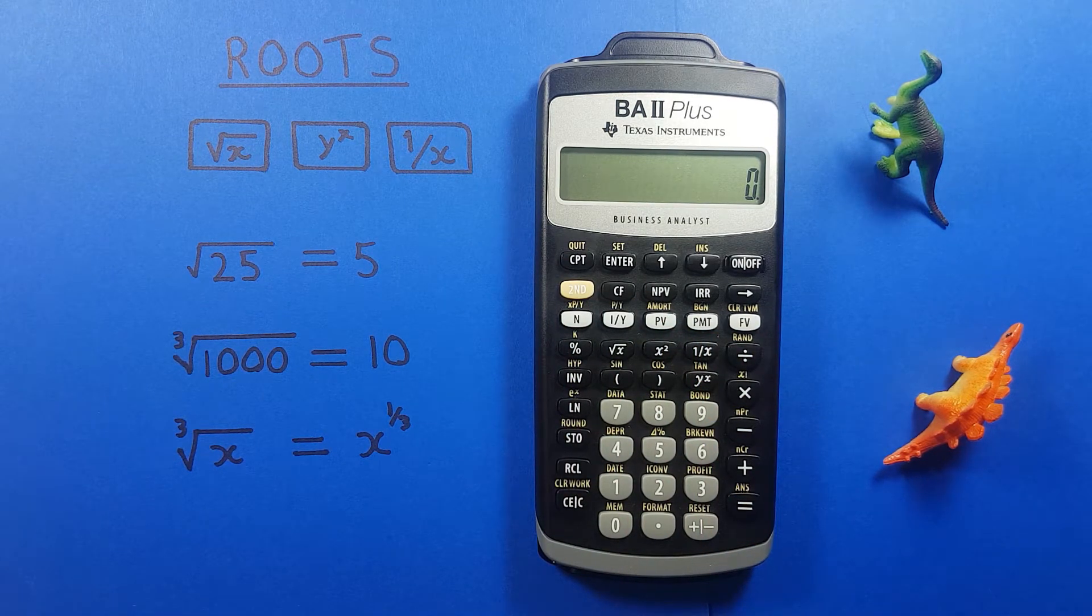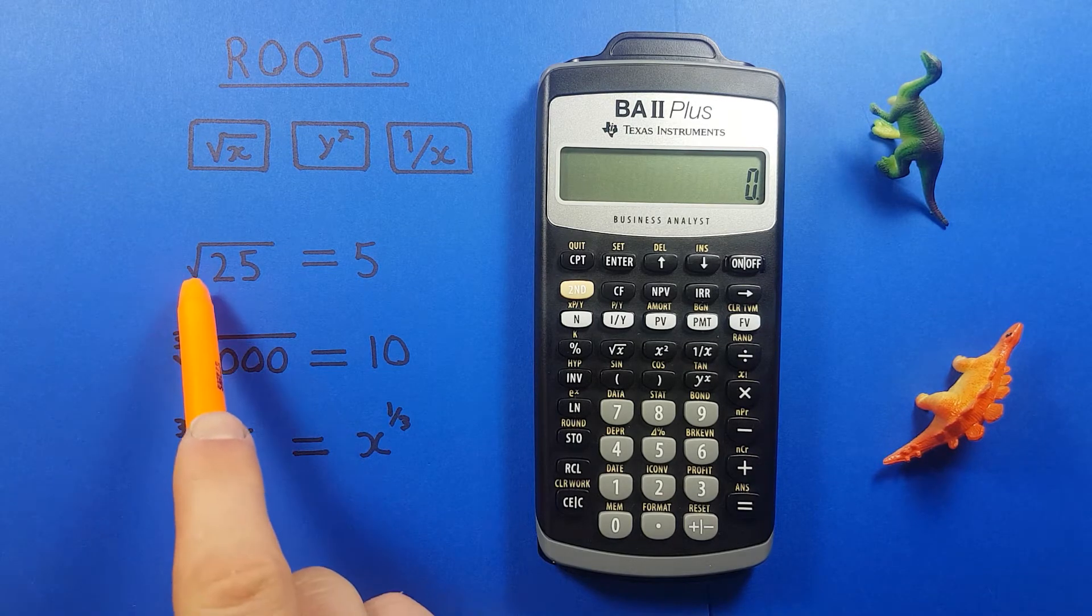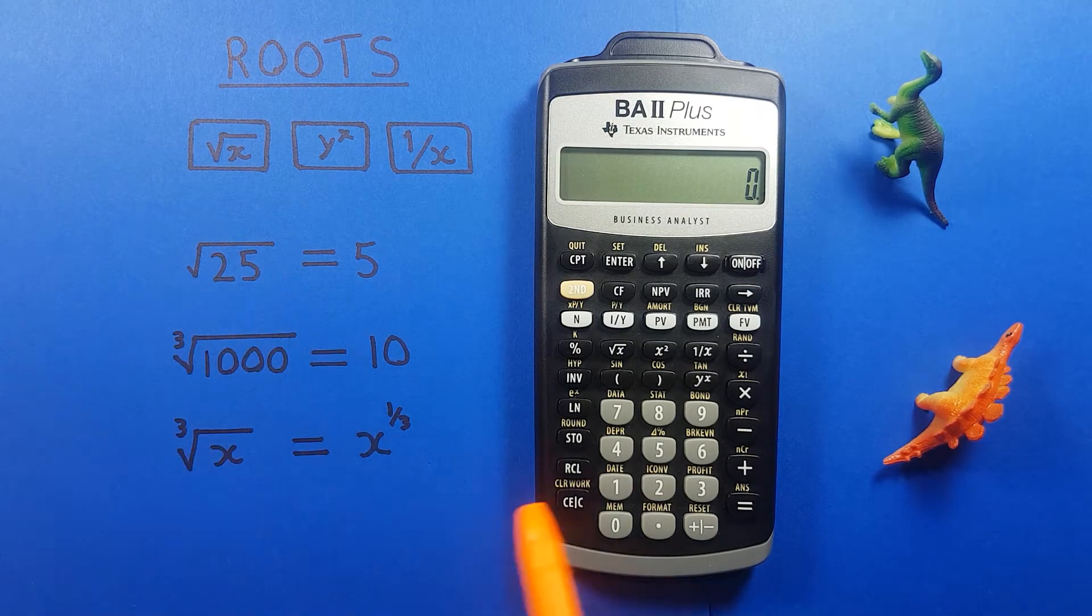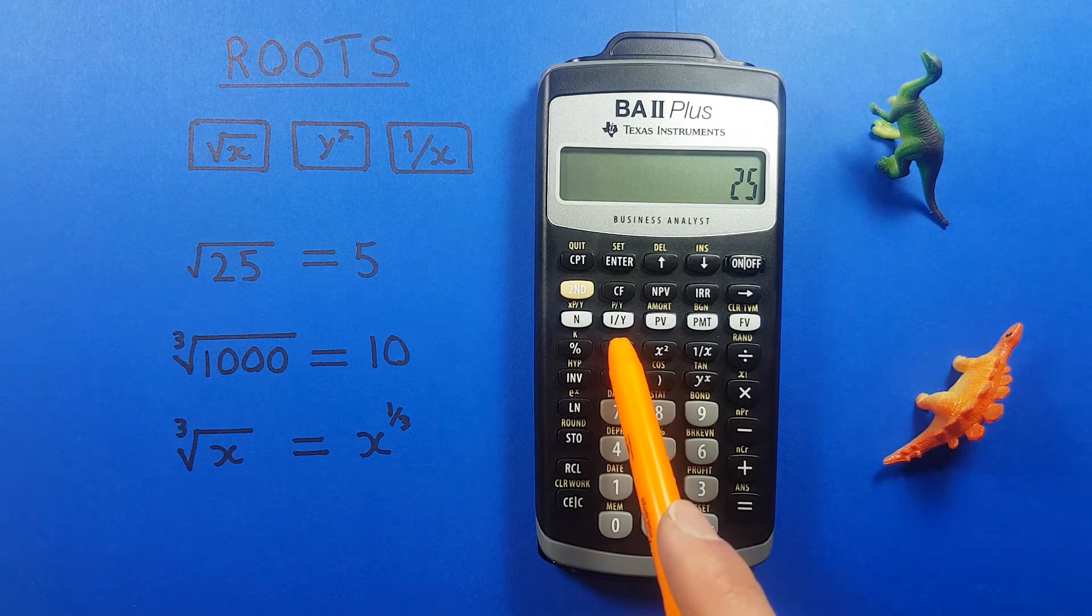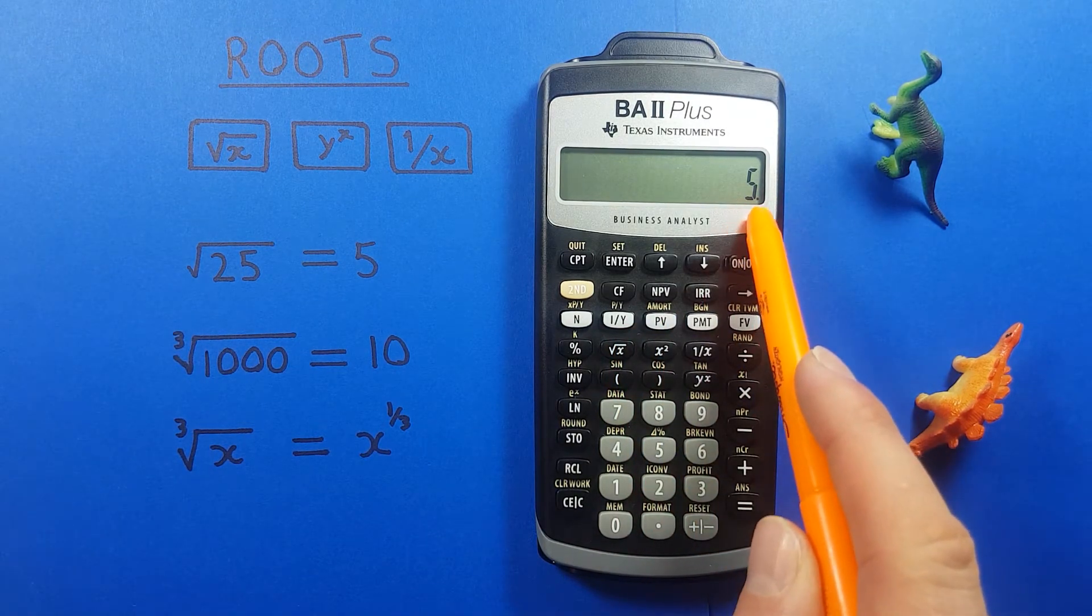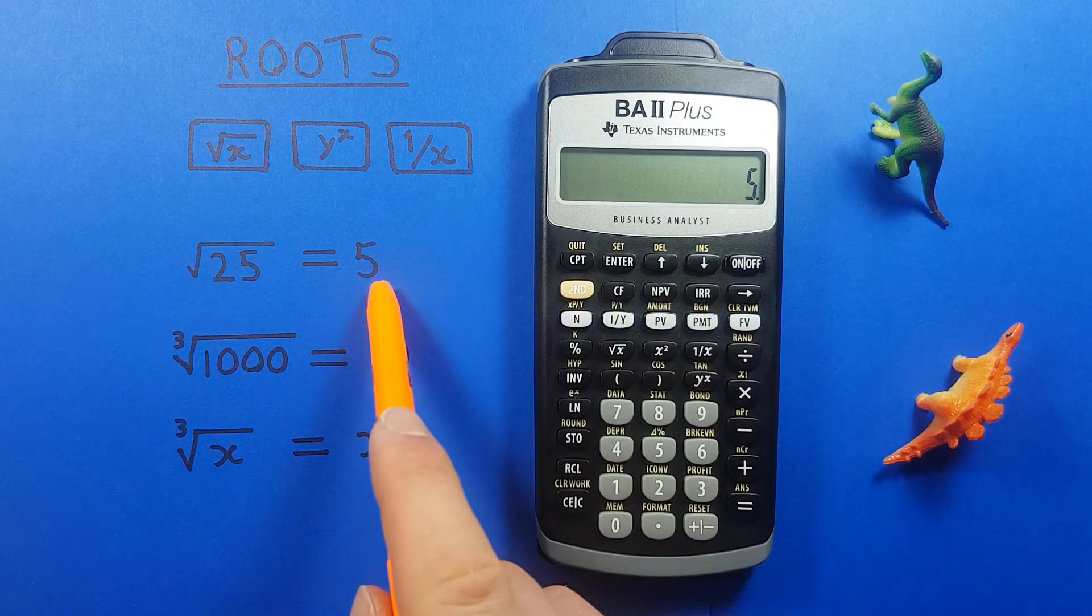Getting started, if we just want to square root a number like the square root of 25, we enter the 25 on the screen, press the square root key, and there we go. You see the square root of 25 equals 5.